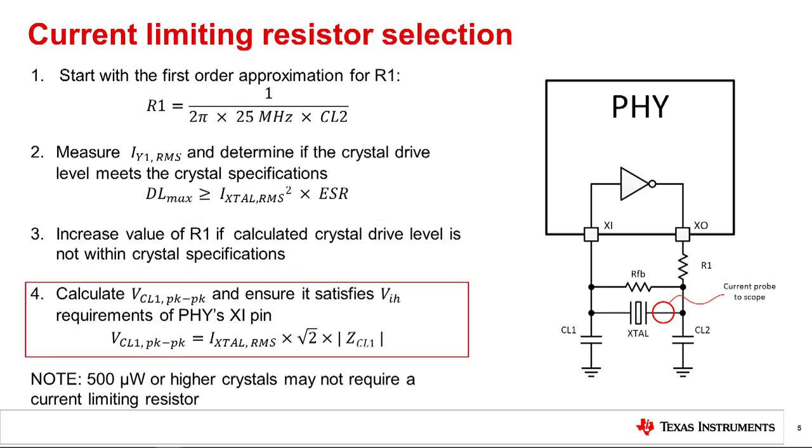Finally, the XI pin is a high impedance input. Estimate the voltage swing at the XI pin by multiplying the impedance of CL1 by the current through the crystal. Ensure that the voltage swing corresponding to the resistor selected satisfies the requirements of the XI pin of the PHY.